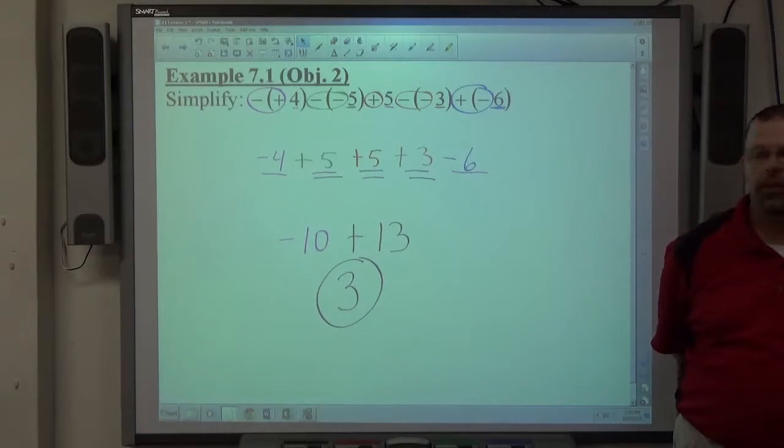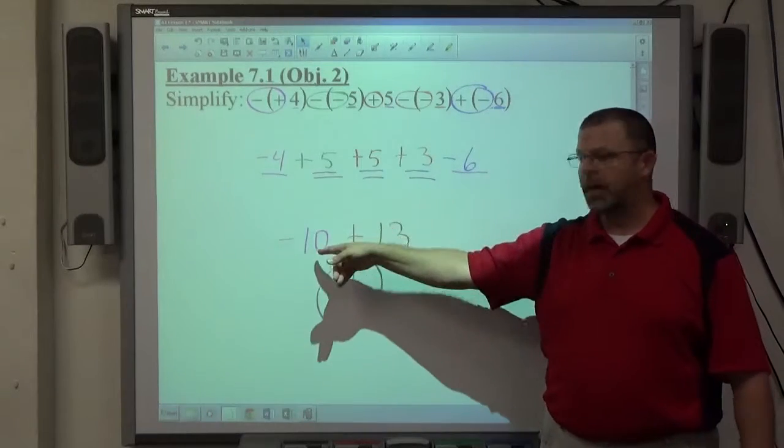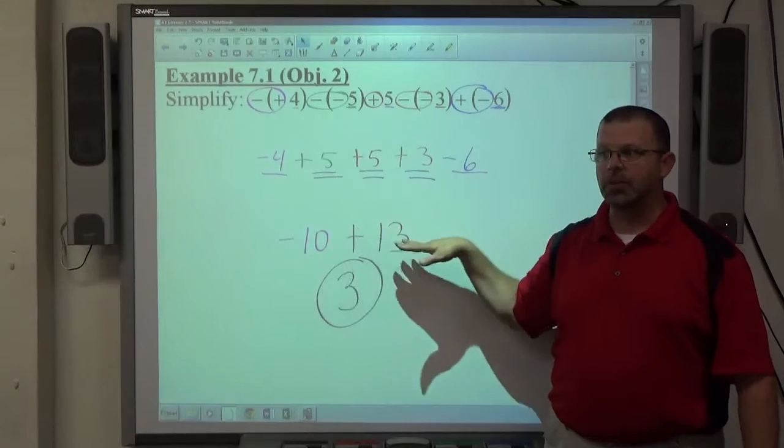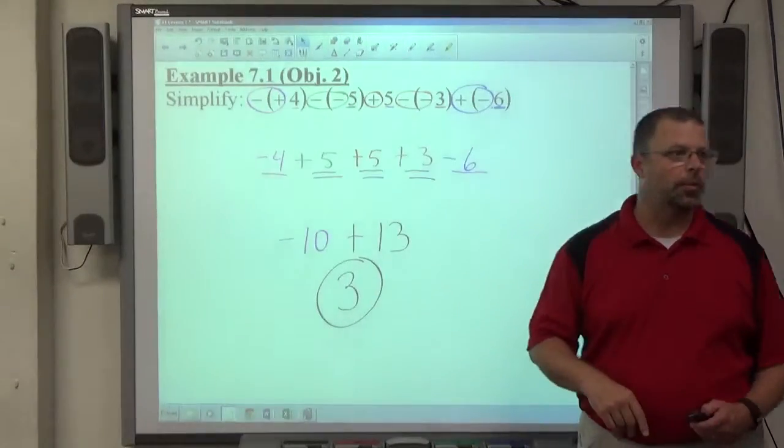It doesn't matter which one you do. Just so long as you have opposite signs every time, because you get one positive and one negative. You always get opposite signs here, so you always subtract the very last step. The answer is always the same sign as the bigger number.